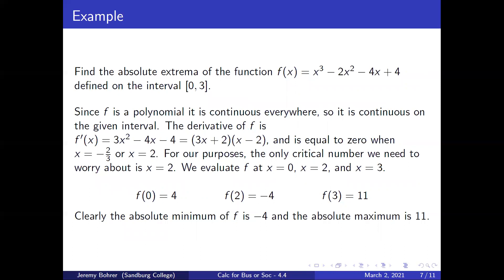Find the absolute extrema of f(x) = x³ - 2x² - 4x + 4 defined on the closed interval [0, 3]. Since f is a polynomial, it is continuous everywhere. The derivative is f′(x) = 3x² - 4x - 4 = (3x + 2)(x - 2), which equals zero when x = -2/3 or x = 2. The only critical number we need is x = 2, since x = -2/3 is outside our interval. Evaluating: f(0) = 4, f(2) = -4, f(3) = 11. The absolute minimum of f is -4 and the absolute maximum is 11.